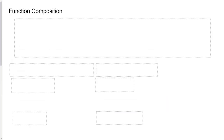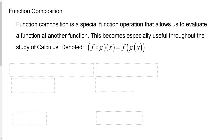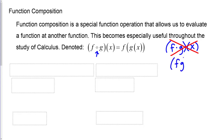Let's talk about function composition. Function composition is a special function operation that allows us to evaluate a function at another function, and becomes especially useful throughout the study of calculus. It's denoted f with a little open circle, then g of x, and we read it 'f of g of x.' It's sometimes mistaken for multiplication, but we don't indicate multiplication of functions this way — if we were multiplying functions, we'd just put f and g next to each other with no operation in between.